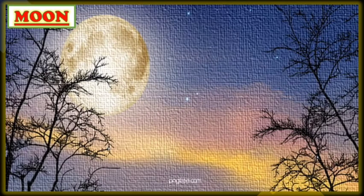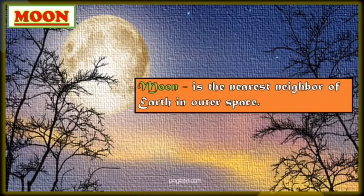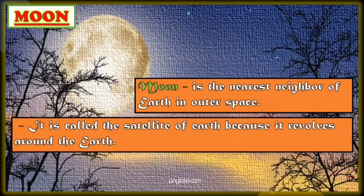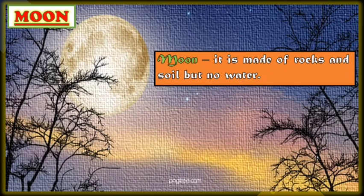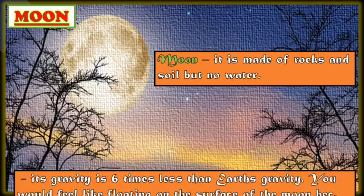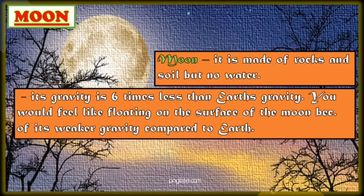So this time, let's know more about the Moon — about its movement, its origin, and associated beliefs. The Moon is the nearest neighbor of Earth in outer space. It is called the satellite of Earth because it revolves around the Earth. Its diameter is about 3,476 kilometers, which is about one-fourth the diameter of the Earth. The Moon is made up of rocks and soil but has no water. Its gravity is six times less than Earth's gravity, so you would feel like floating on the surface of the Moon because of its weaker gravity.